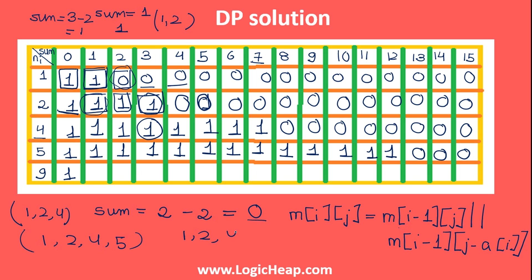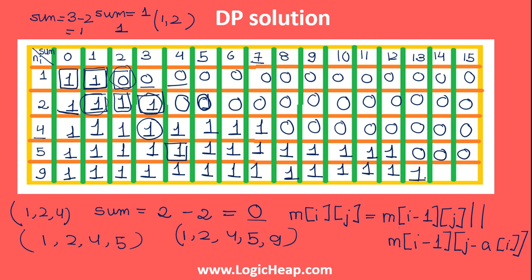For the final row {1,2,4,5,9}: sums 1 through 12 are all 1. For sum 13: 13 minus 9 equals 4, and at sum 4 we have 1 — store 1. For sum 14: 14 minus 9 equals 5, and at sum 5 we have 1 — store 1. For sum 15: 15 minus 9 equals 6, and at sum 6 we have 1 — store 1. So yes, you can make sum equal to 15 using {1, 2, 4, 5, 9}, and I got this answer from the last cell.